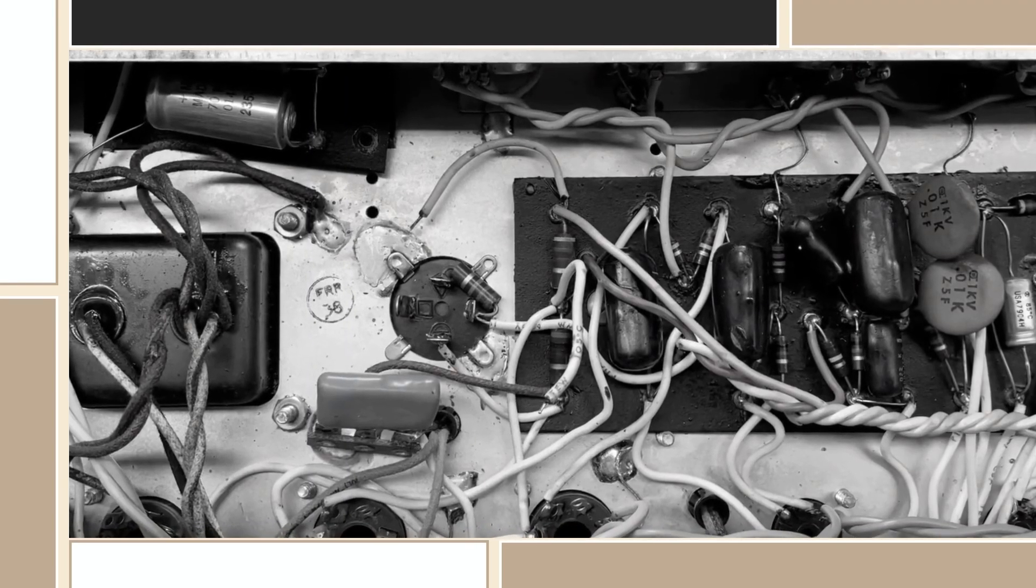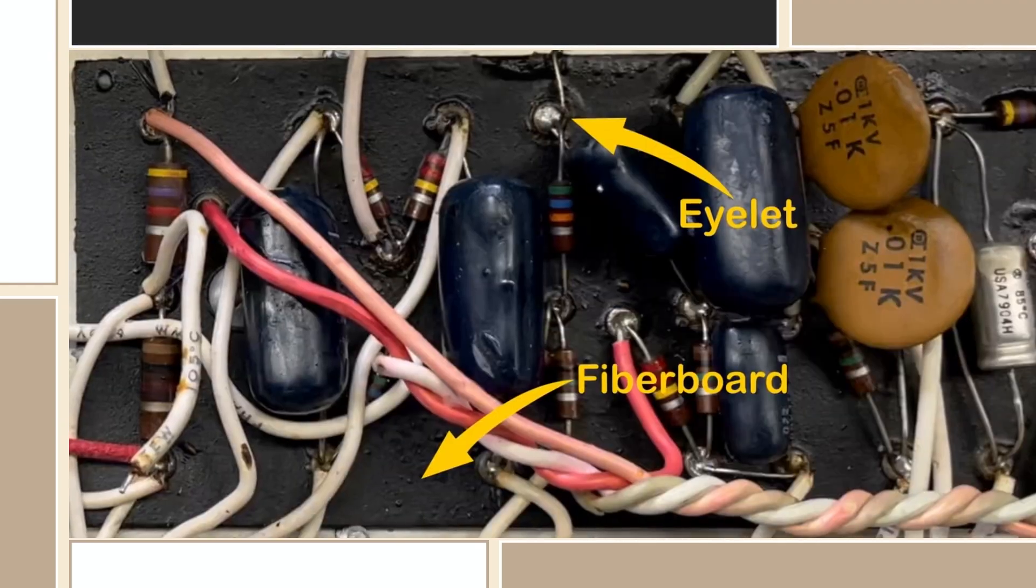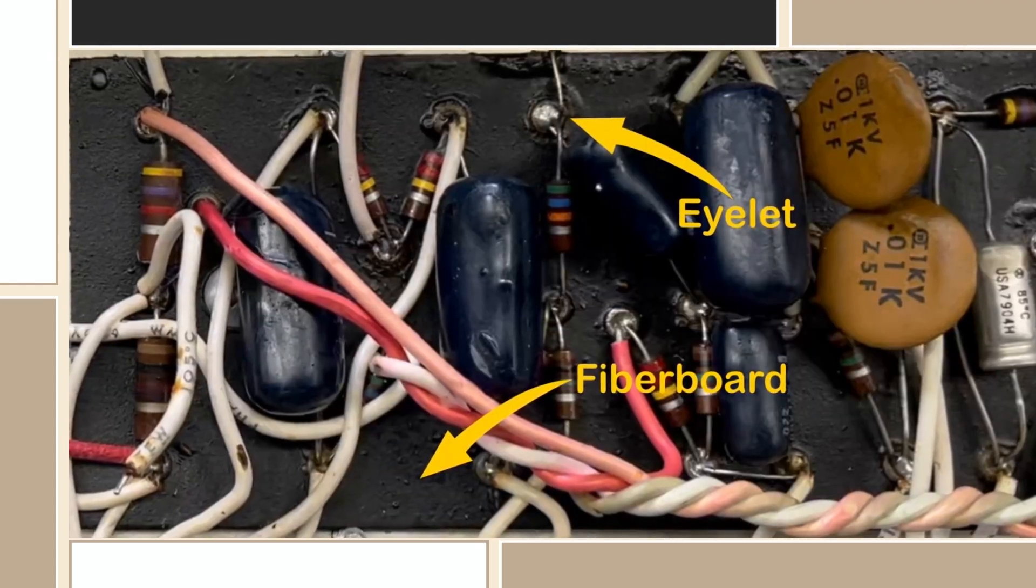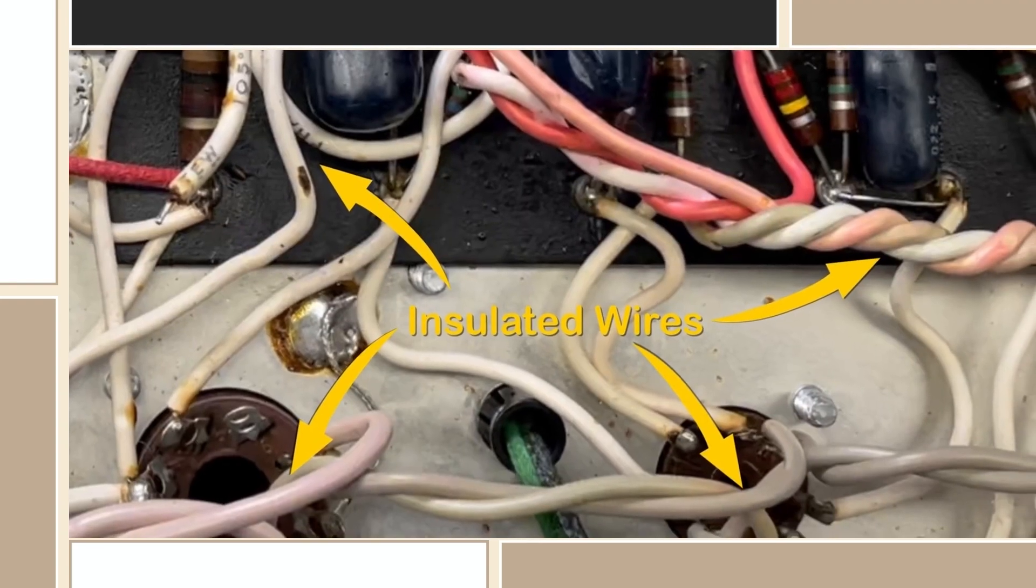What was revealed when locating the components needing replacement was an eyelet fiberboard assembly, capacitor mounted and soldered to a metal chassis, and a highway of wires.